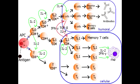T-Helper 1 cells are inhibited by interleukins released from T-Helper 2 cells. Both T-Helper cell types inhibit one another via their cytokines. Specifically, T-Helper 1 is inhibited by interleukin 4 and interleukin 10, which are secreted by T-Helper 2 cells.